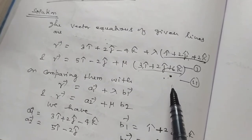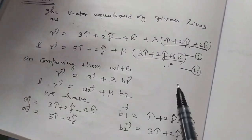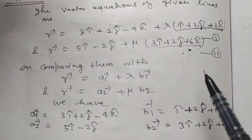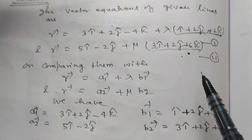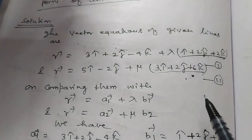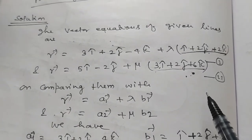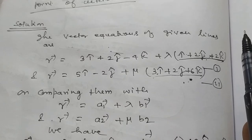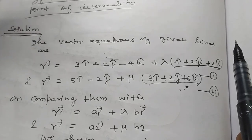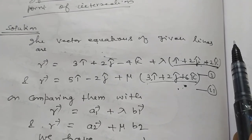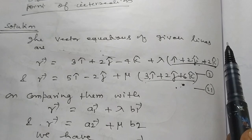You have dot product and cross product — give children all this knowledge so they can solve this question. When the shortest distance is zero, it is an intersecting line. When the lines are parallel, the shortest distance formula is different. When shortest distance is zero, the lines are intersecting. The nature of the lines must be determined. So the shortest distance topic is very important for this year.